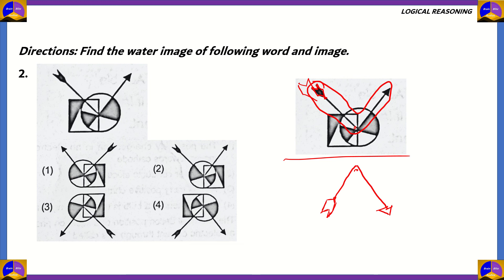Checking each option: option 1 is not correct — it's showing the mirror image, as if a mirror were placed to the right of the figure. Option 2 is also a mirror image, and the arrow is not inverted, so it's wrong. Option 3 has a water image but it is also additionally inverted, so it's wrong. The correct answer is option 4. If we check the water image of the figure, we get option number 4.